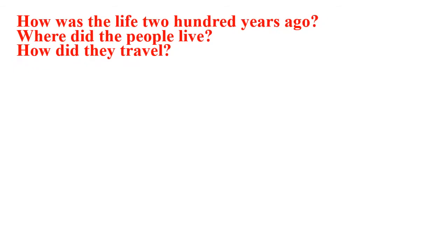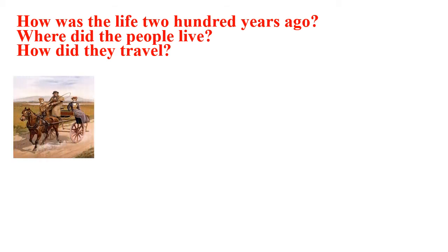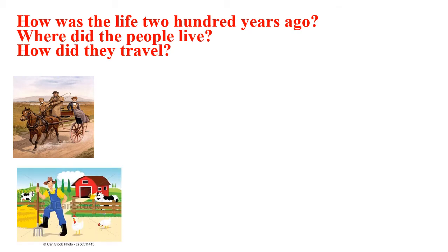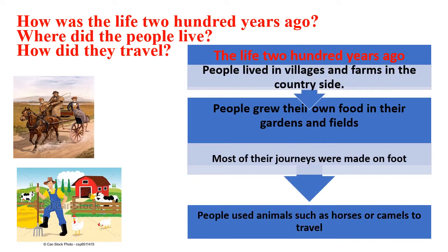Think: how was life 200 years ago? Where did people live — in villages, cities, or towns? How did they travel? Did they use cars or any animals? Yes, they used animals to travel like horses and camels. They lived in villages in the countryside and grew crops and kept animals.